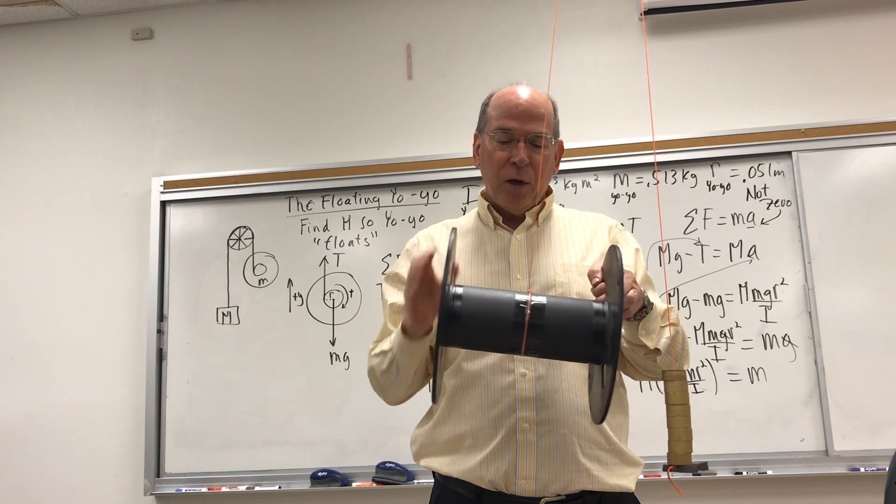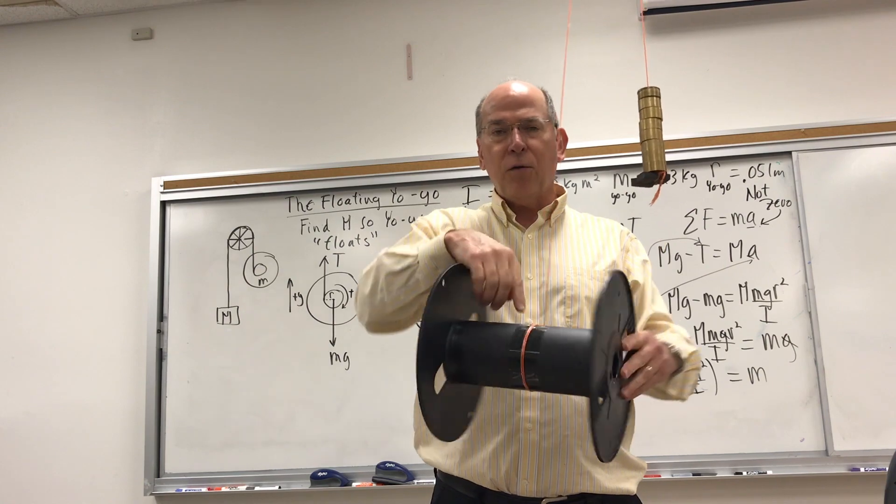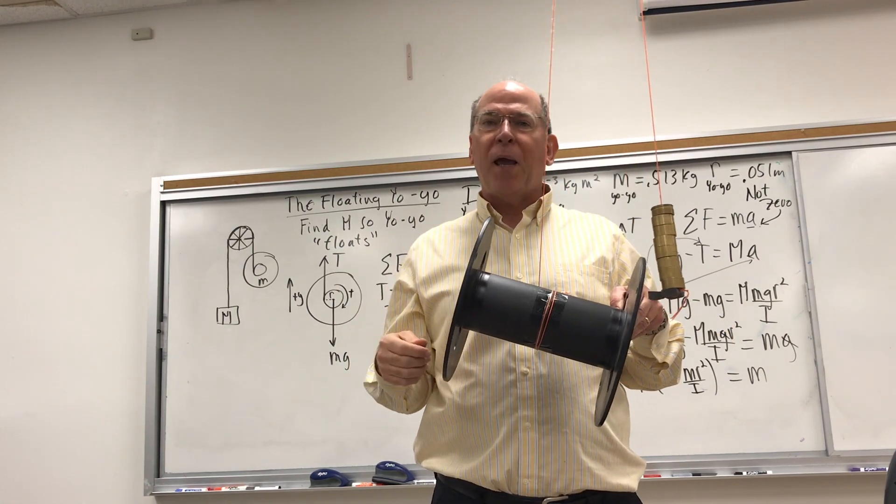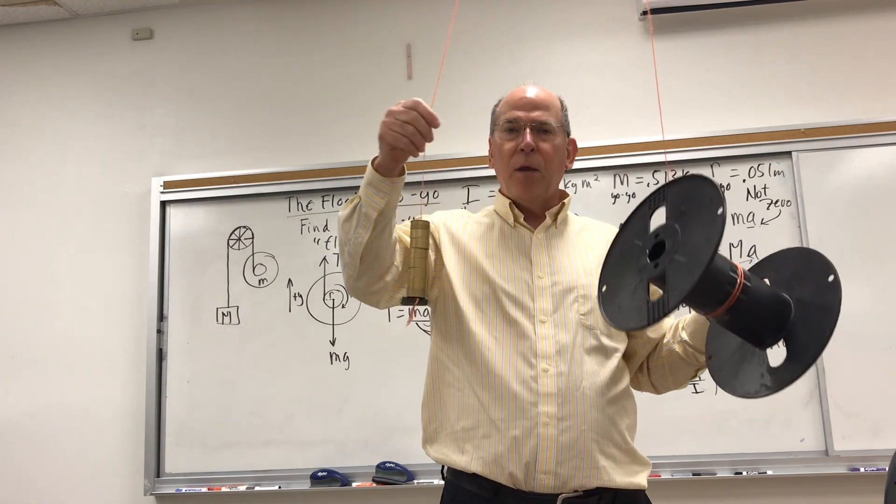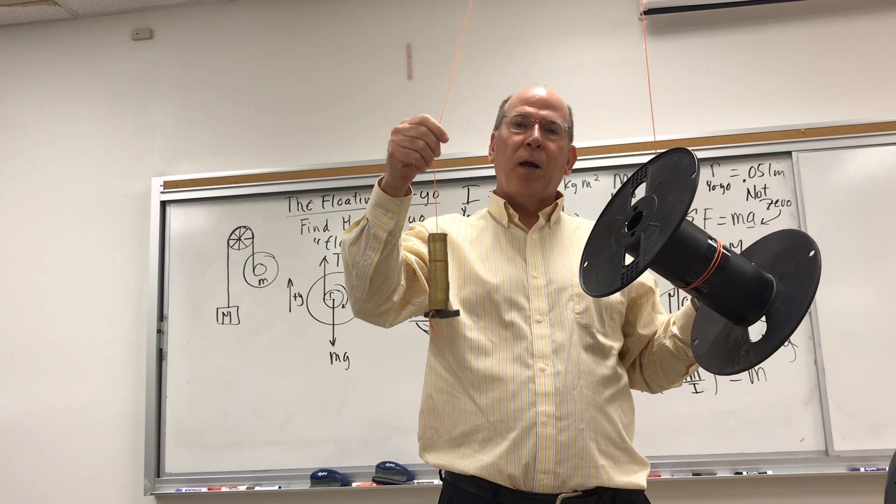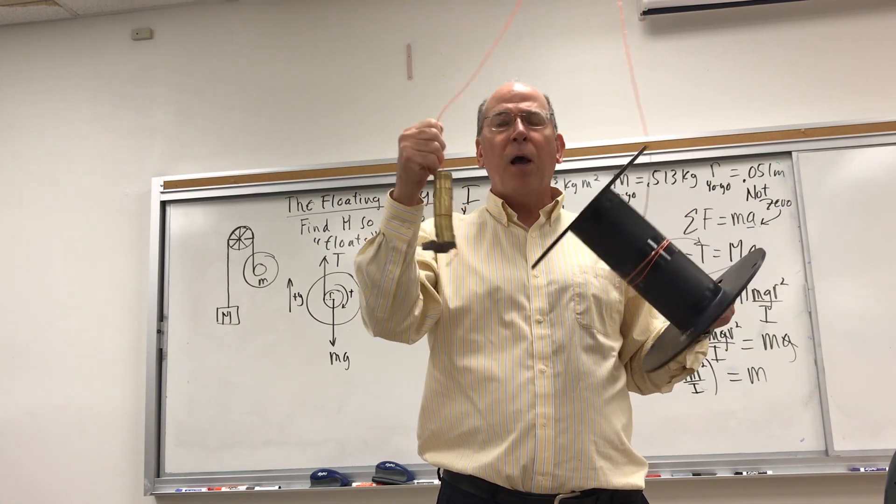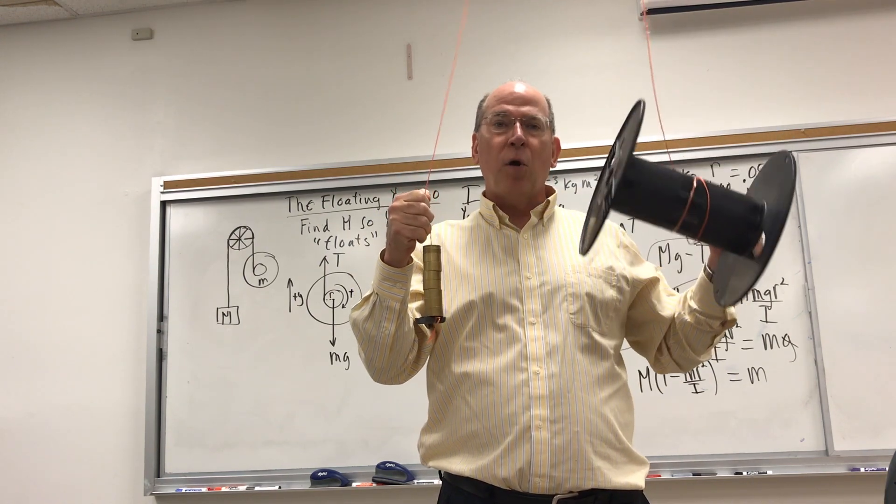The advantage of it is if I wind the string around, the radius doesn't really change. And to get around the pulling up with my hand problem, the string goes up and over a pulley and then it's attached to a weight, so I get a constant force pulling on it. I turn the problem into how much weight should I put on the end so that the yo-yo floats.